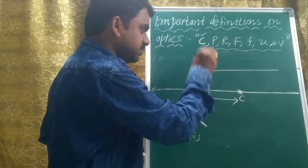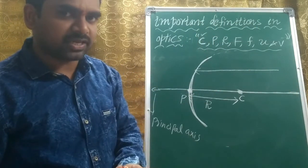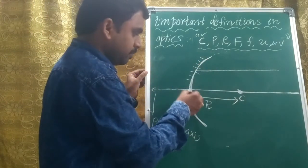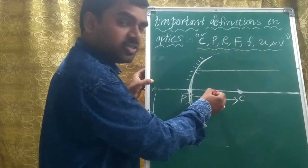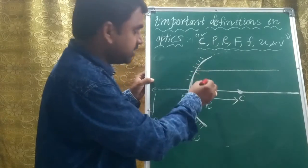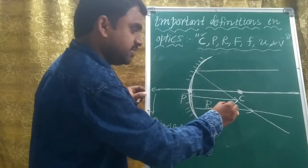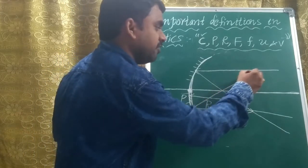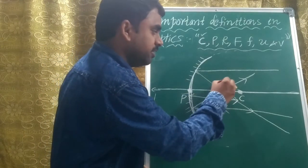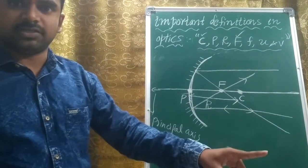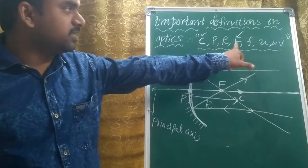What is the focal point? Suppose rays are traveling from very long distances — they are coming from the sun, so they become parallel to each other. If you take a concave mirror, a ray parallel to the principal axis after reflection converges at a point. Similarly, another parallel ray after reflection also passes through the same point. The point where reflected parallel rays intersect is called the focus or focal point.